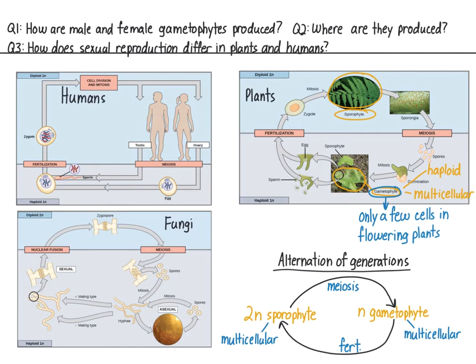At this point, try to answer the question: do humans have alternating generations? Why or why not? So humans do not have alternation of generations because their haploid cells are single-celled. Alternation of generations involves a multicellular haploid stage and a multicellular diploid stage.